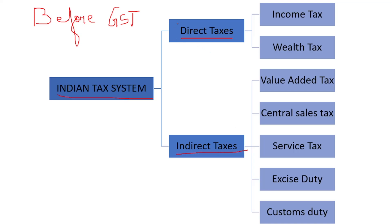Now, we are going to look at direct taxes and indirect taxes. Direct taxes are imposed on the income of a person, which includes income tax and wealth tax. So these two were the major parts in the direct taxes.